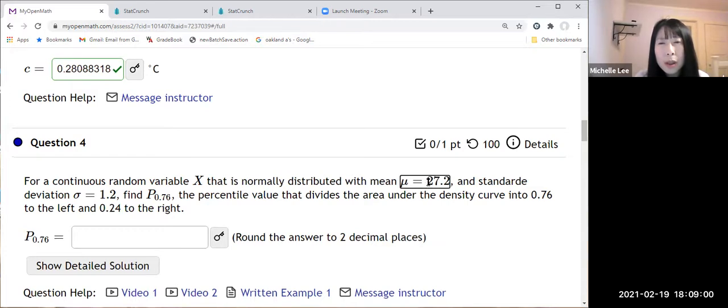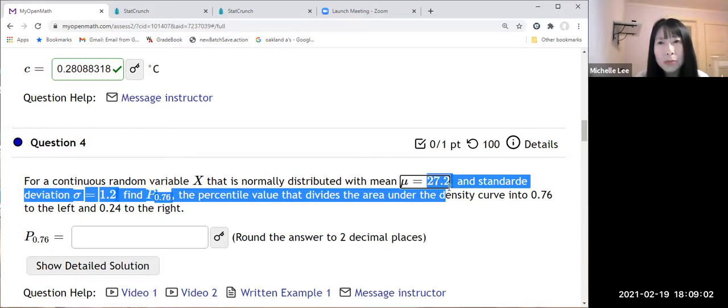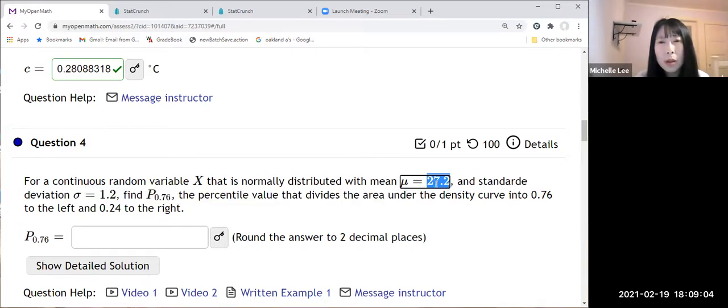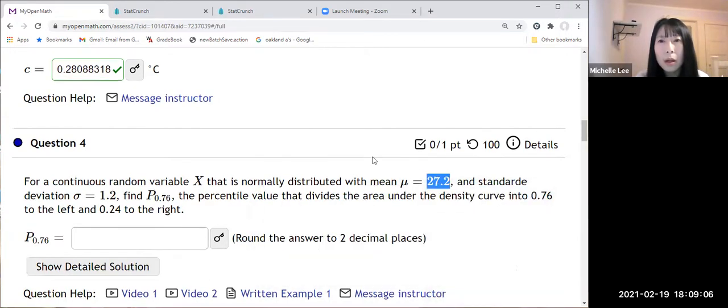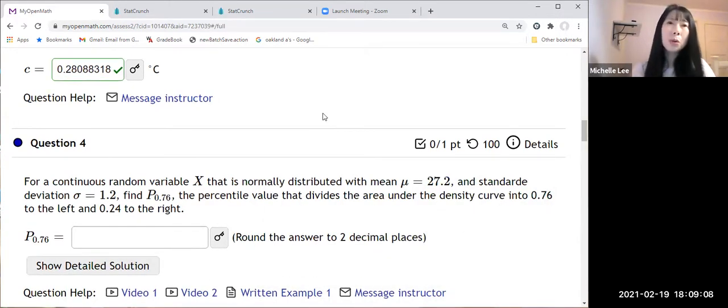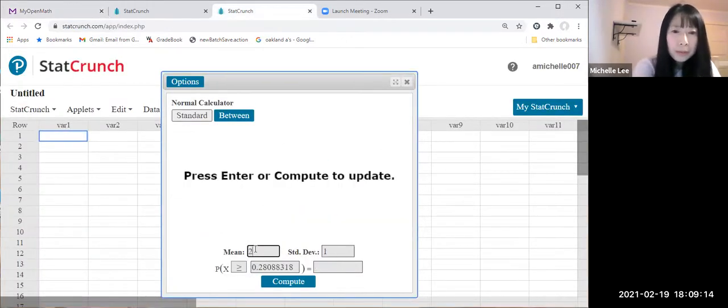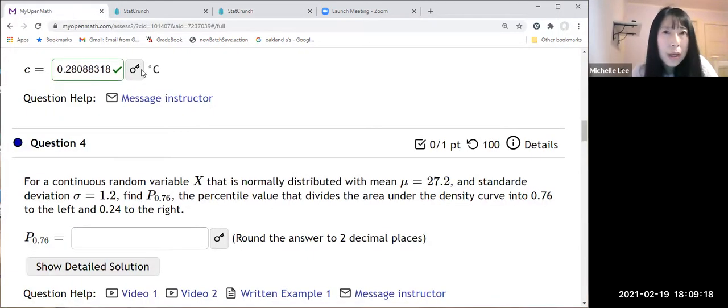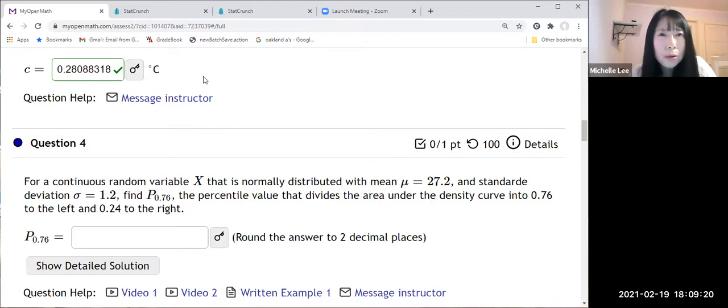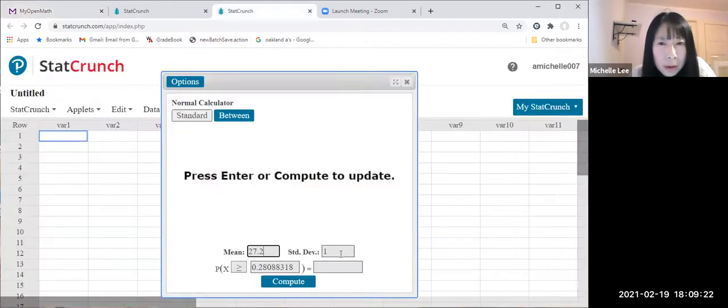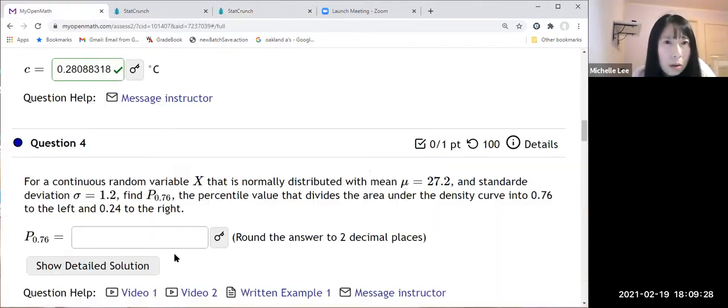Mu equal to 27.2. So let me make a copy of this one. Oh, cannot copy. So 27.2. Let us do that. 27.2. Now standard deviation is 1.2, 1.2. And now let us take a look.